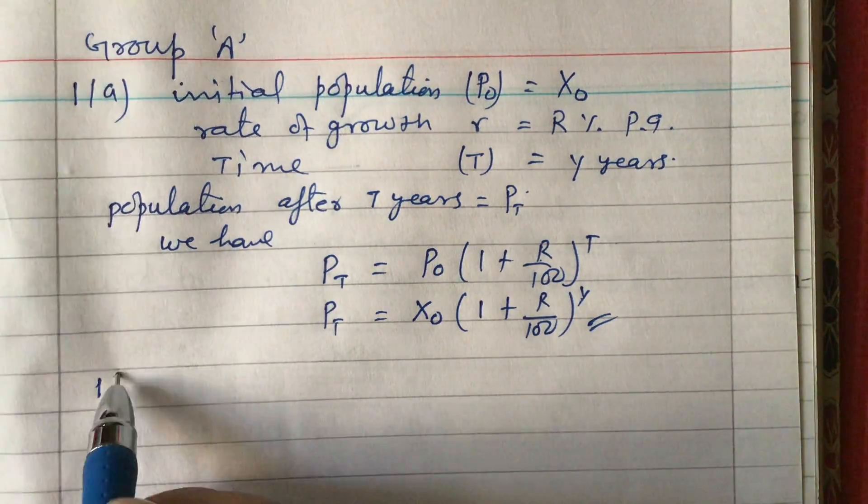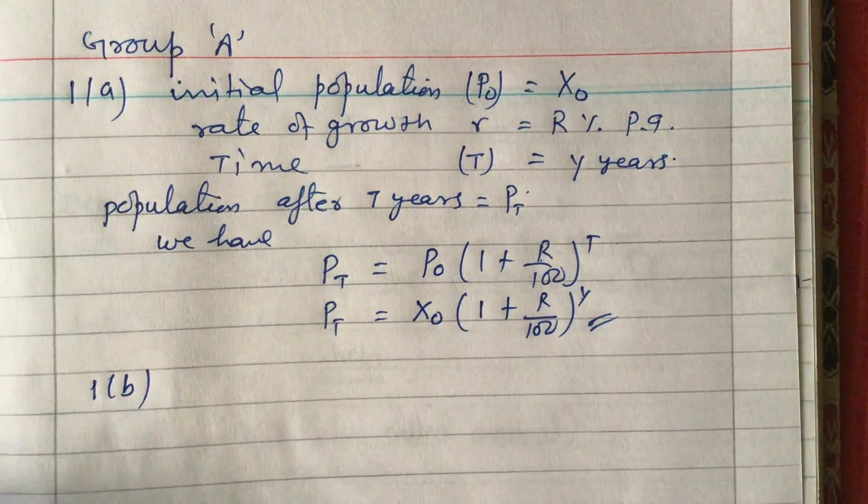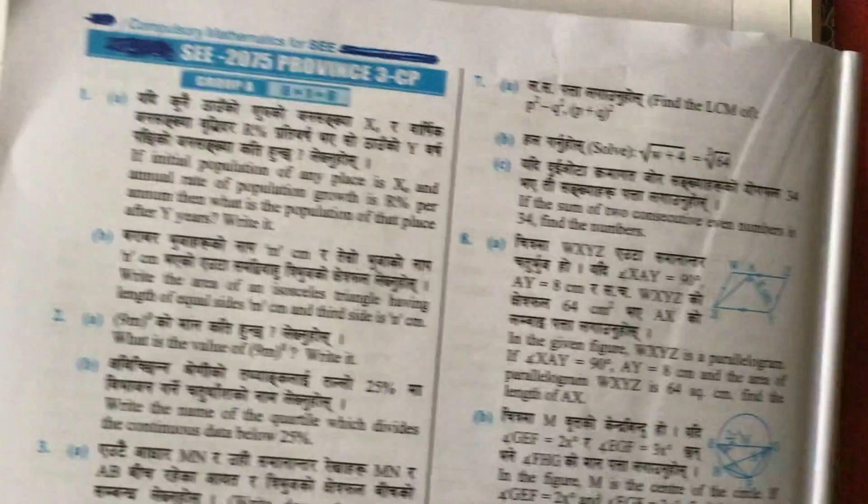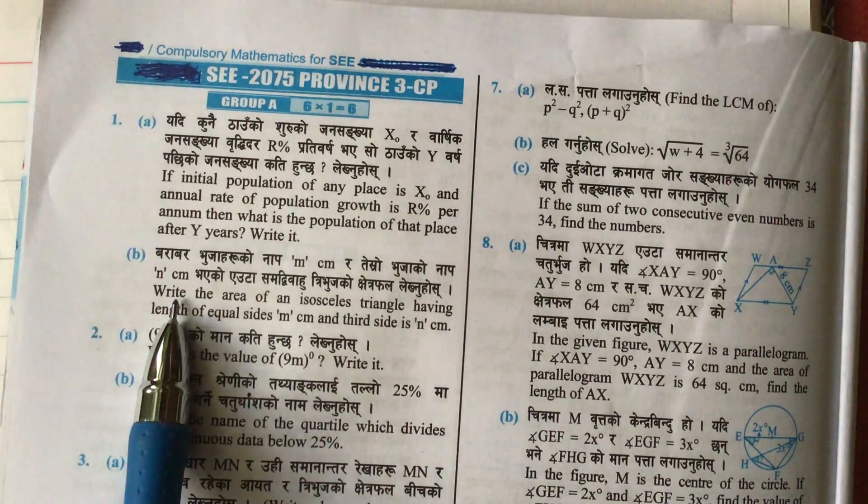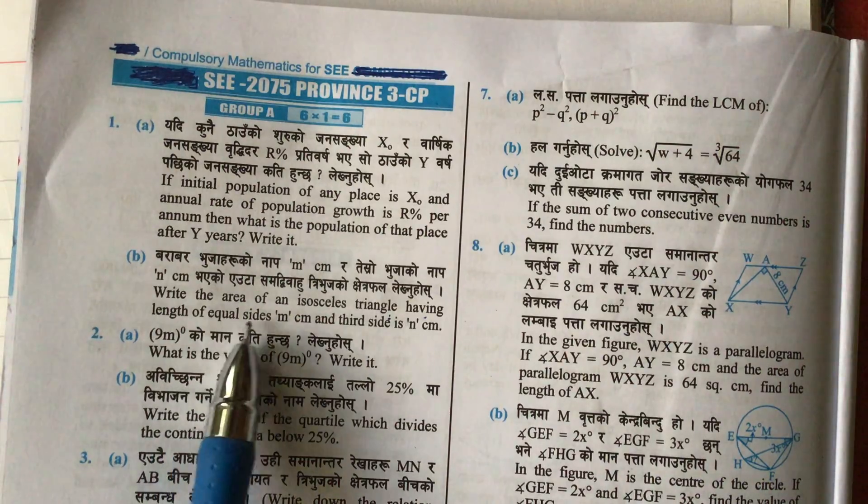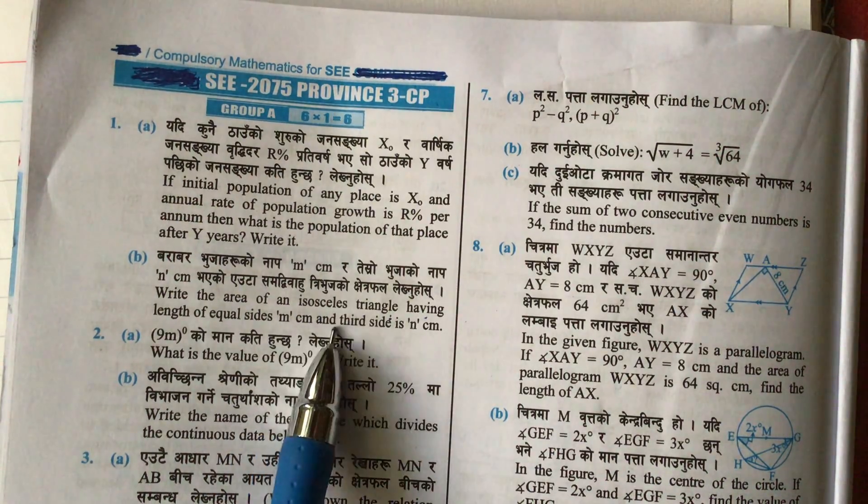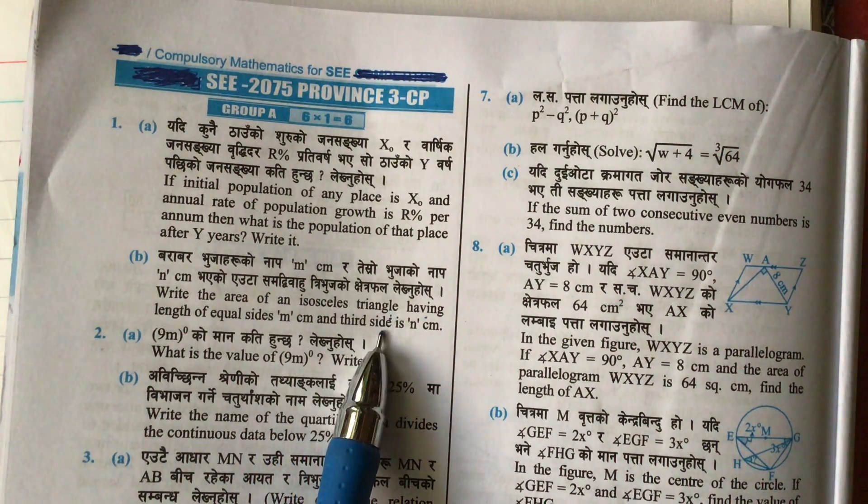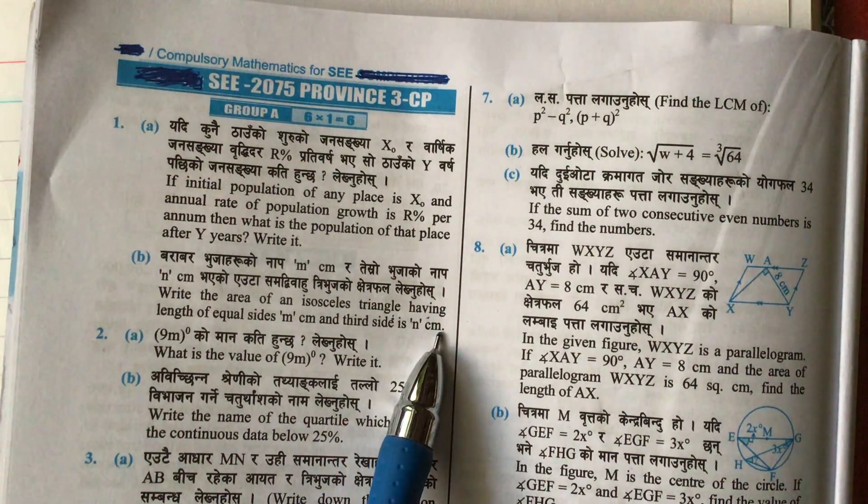Now let's look at question number 1b. The question asks: write the area of an isosceles triangle having equal sides of length m centimeters and a base side of n centimeters.